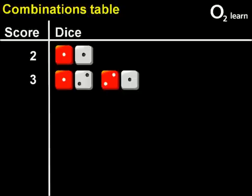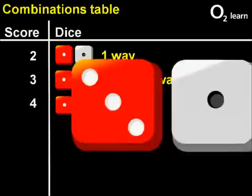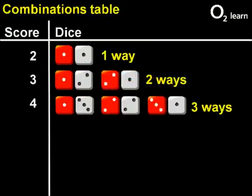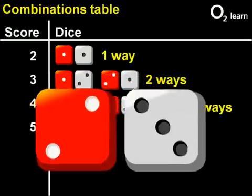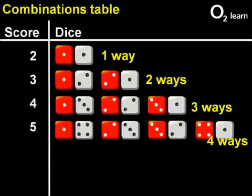The most likely score is the one which has the most combinations to get it. A score of four has three ways. A score of five has four ways, and so on. We should go on and work out each one like this for scores all the way up to 12.